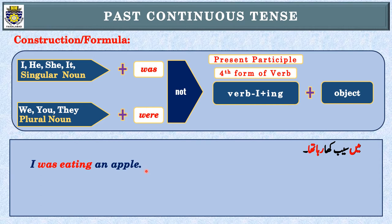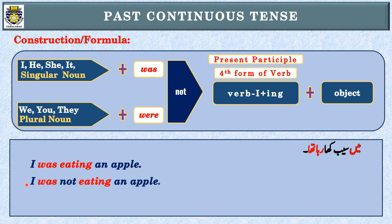Negative sentence: was یا were — helping verb — کے بعد not use کریں گے، تو آئے گا: I was not eating an apple۔ If we want to make it interrogative, was کو ہم sentence کے start میں لے آئیں گے، تو sentence ہے: Was I eating an apple? Never forget to put a question mark at the end of all interrogative sentences.